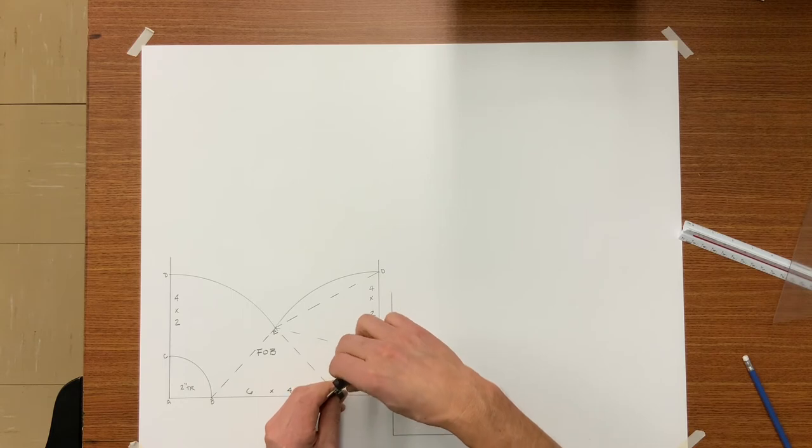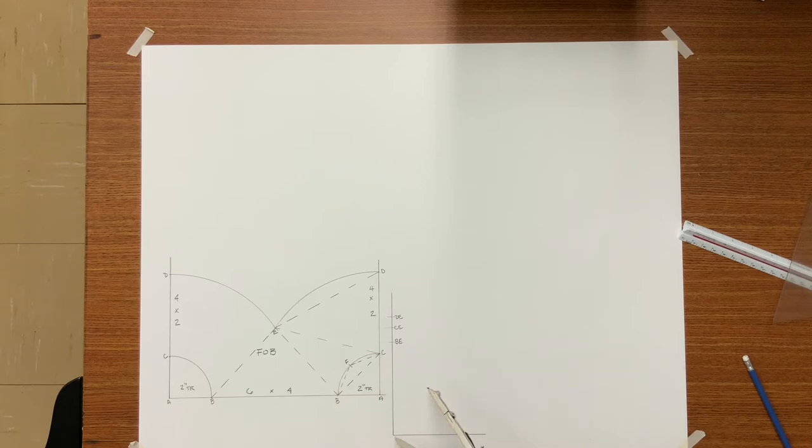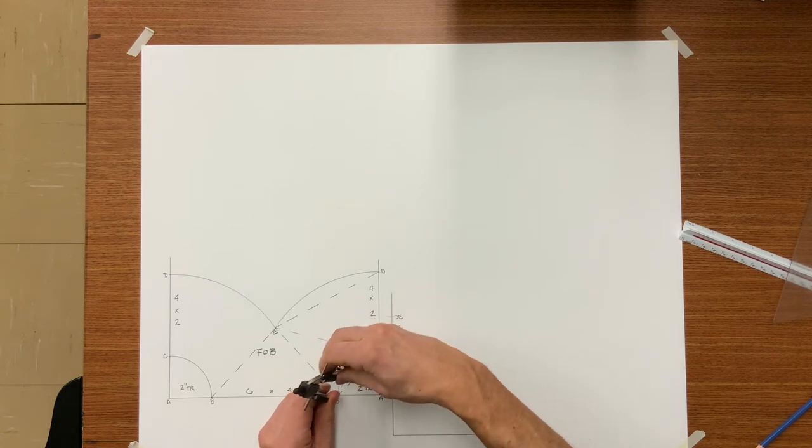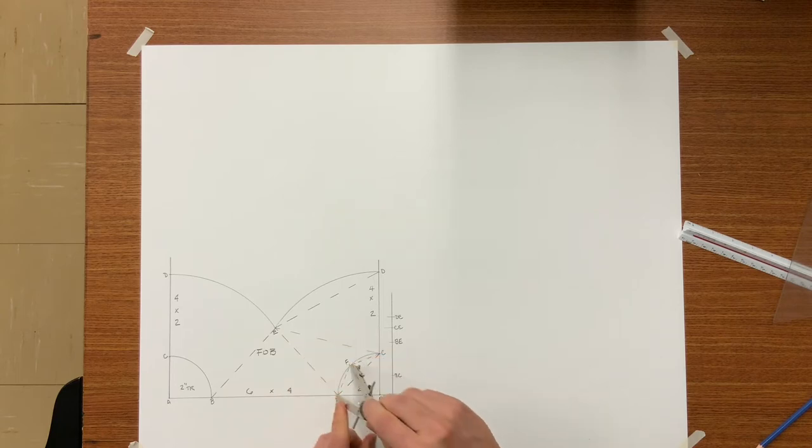And transfer the element line lengths to the vertical height on my true length triangle. Now go ahead and set your dividers or your compass to BC and transfer that measurement up onto your vertical line. Now go ahead and set your dividers or your compass to BC and transfer that measurement up onto your vertical line. And you will note that CF is identical to BF.